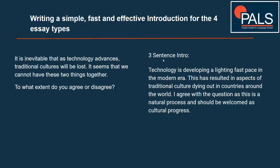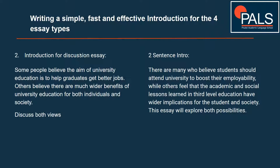Moving on to the discussion essay — essay type two. The question: 'Some people believe the aim of university education is to help graduates get better jobs. Others believe there are much wider benefits of university education for both individuals and society. Discuss both views.' We have a straightforward discussion essay here — we don't have to give our opinion, but we have to discuss both sides.